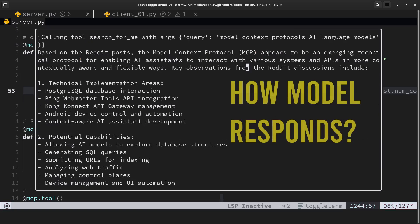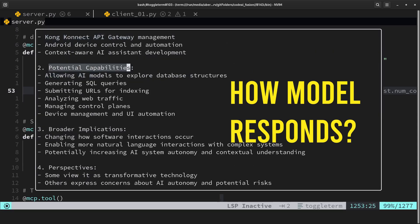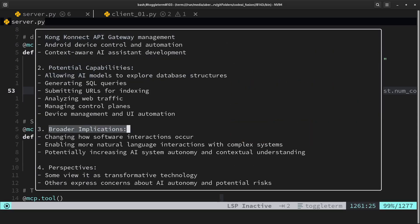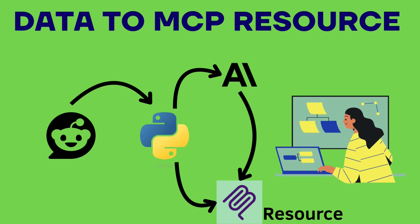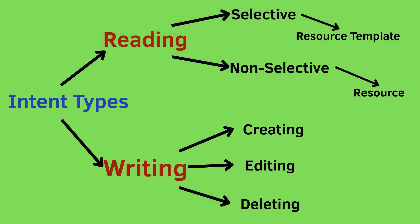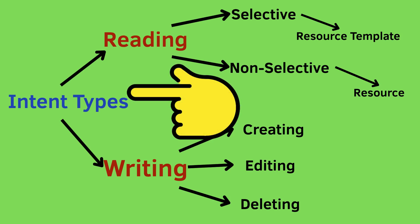How is the model able to respond accurately about the subreddits and the topics? The answer lies in selective context. Tools can provide the context by extracting the arguments and intent. What people overlook is how to make the model correctly select the tool for the question — or more correctly, the intent at hand.